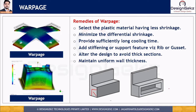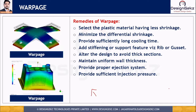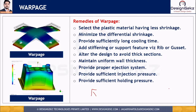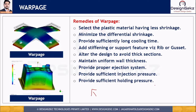Warpage can also be reduced or eliminated by providing a proper ejection mechanism and by providing sufficient injection pressure and sufficient holding pressure. As a design engineer, we can take remedial actions proactively by adding stiffening profiles such as ribs and gussets, designing parts with uniform thickness, and selecting materials with less shrinkage percentage. Non-uniform thickness leads to uneven solidification, which leads to temperature differences, which leads to internal stresses, which ultimately leads to warpage. Therefore we must maintain uniform thickness and add stiffening profiles to deal with warpage.